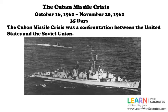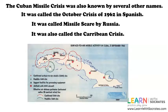The Cuban Missile Crisis was a confrontation between the United States and the Soviet Union. It was also known by several other names: the October Crisis of 1962 in Spanish, Missile Scare by Russia, and the Caribbean Crisis.